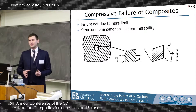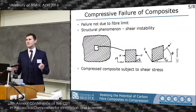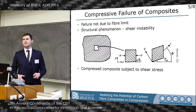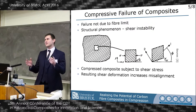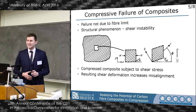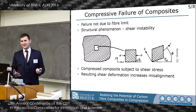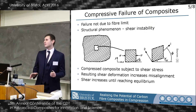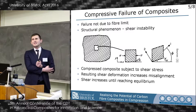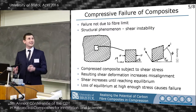The way shear instability works is shown in this picture. We have a composite with initially misaligned fibers. We compress it — this misalignment creates shear stress. Shear stress creates shear strain, which increases the misalignment. There's now higher misalignment that increases the shear stress again. So the strain increases, the misalignment increases, and so on. We reach equilibrium eventually. If we increase the load, this equilibrium will be lost at some point, creating an instability and leading to failure.